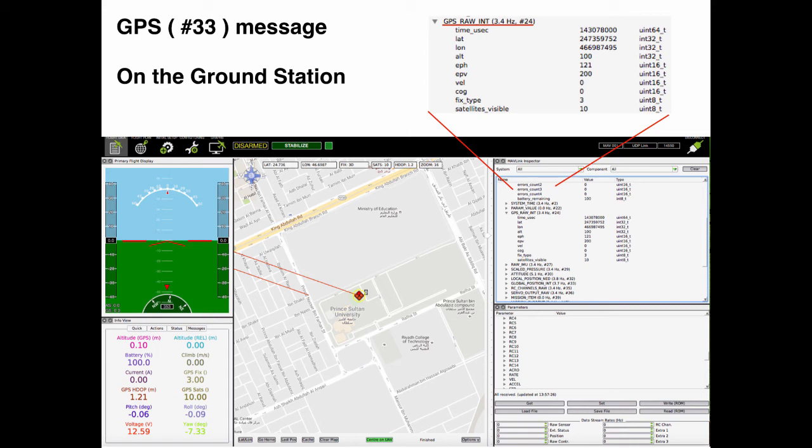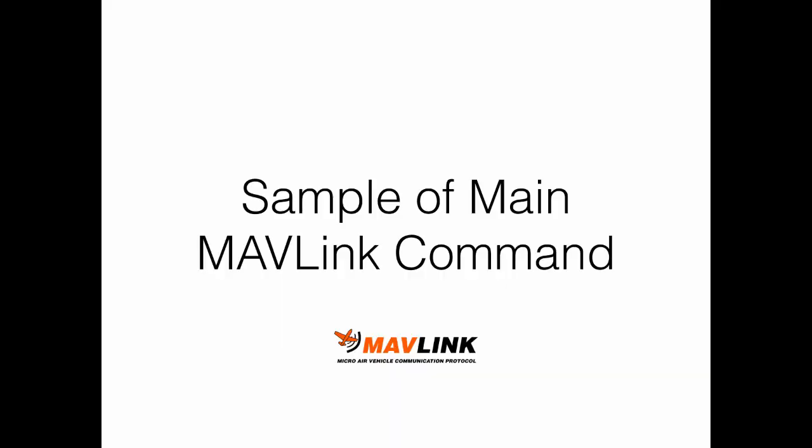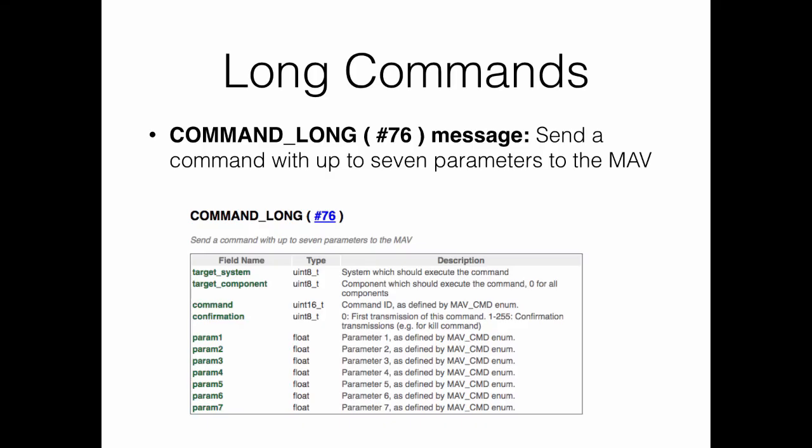So far we have presented a sample of MAVLink messages. Next we will present a sample of command messages. The difference between a MAVLink message and a MAVLink command is that the MAVLink message is sent from the drone to the ground station, whereas the MAVLink command is usually sent from the ground station to the drone. Long commands can be defined with up to 7 parameters (param1 to param7), each a float encoded into 32 bits. The command also specifies the target system ID and target component.